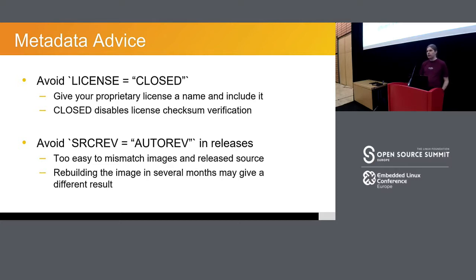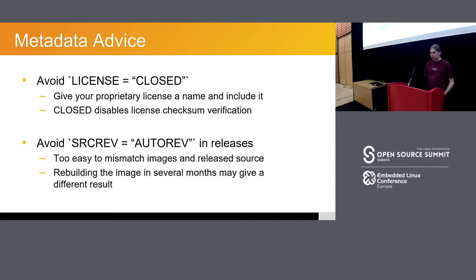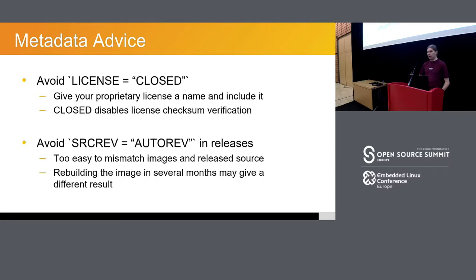For version control repositories, we have SRCREV which says what commit hash or version we pull from the Git or Mercurial repository. We have this convenient thing for development called AUTOREV where you give it a branch and it will just pull the latest commit from that. Make sure you don't leave that on for releases — if somebody pushes something five minutes before you do your release, you might end up building the wrong version. And if you give this to somebody else three years later when they try to rebuild it, it will be pointing at a different hash. Always avoid AUTOREV for releases — it's too easy to end up with a mismatch where you think you've audited something and then it's pulled a newer version.